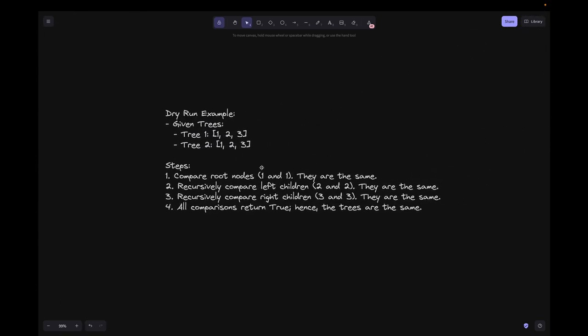Let's consider the given trees: one-one-two-three and one-two-three. Step one is to compare the root nodes one and one - these are the same. Step two, recursively compare the left subtree and right subtree. Both left subtrees are two and two, and the right subtrees are three and three. So all comparisons return true here, hence the trees are the same.